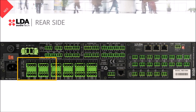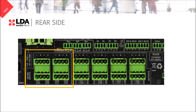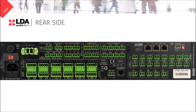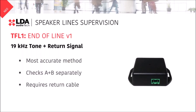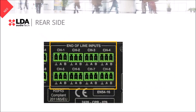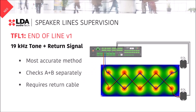On the left side of the amplifier outputs, we have the spare inputs. They are used to make the necessary connections whenever you need a backup amplifier. After the speaker lines, we will need our end-of-line device. We call it TFL. Please note only version 1 of this device needs the return cable. The return cable will be connected in Neo into these inputs, creating a system like the one in the picture.